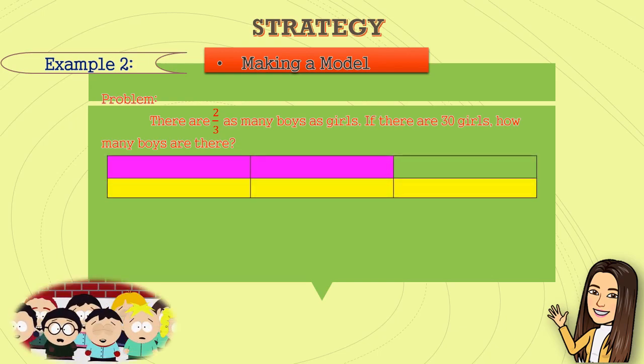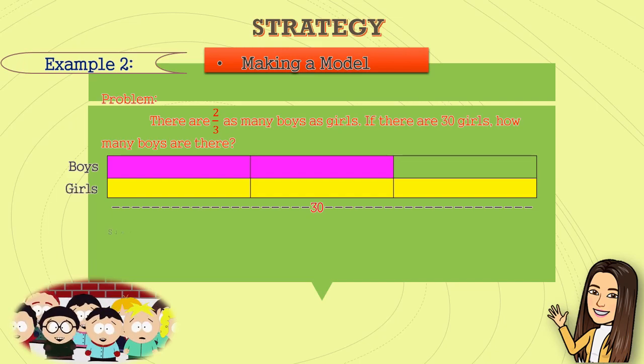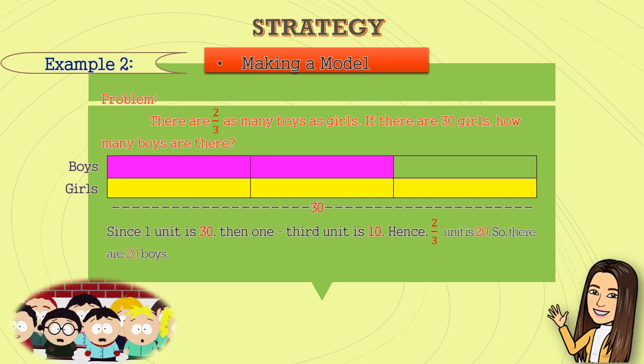Let's use this model. Since you have 30 girls, we label this boys and girls. Since one unit is 30, then one-third unit is 10. Hence, two-thirds unit is 20. So, there are 20 boys.